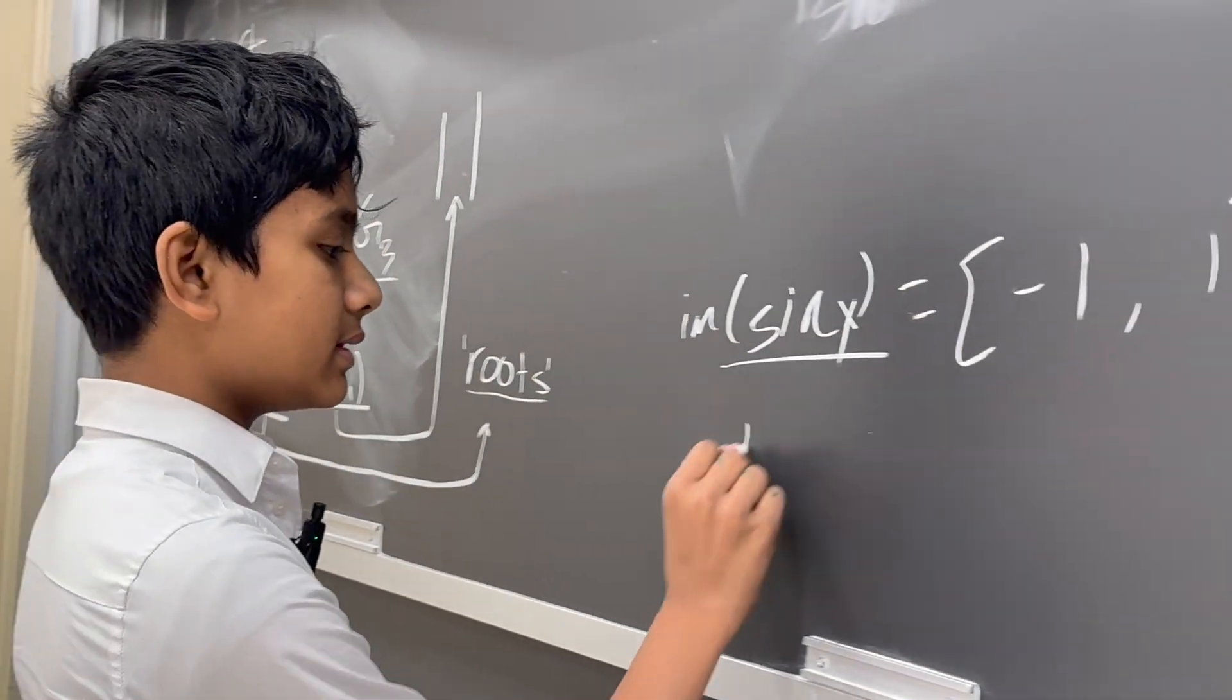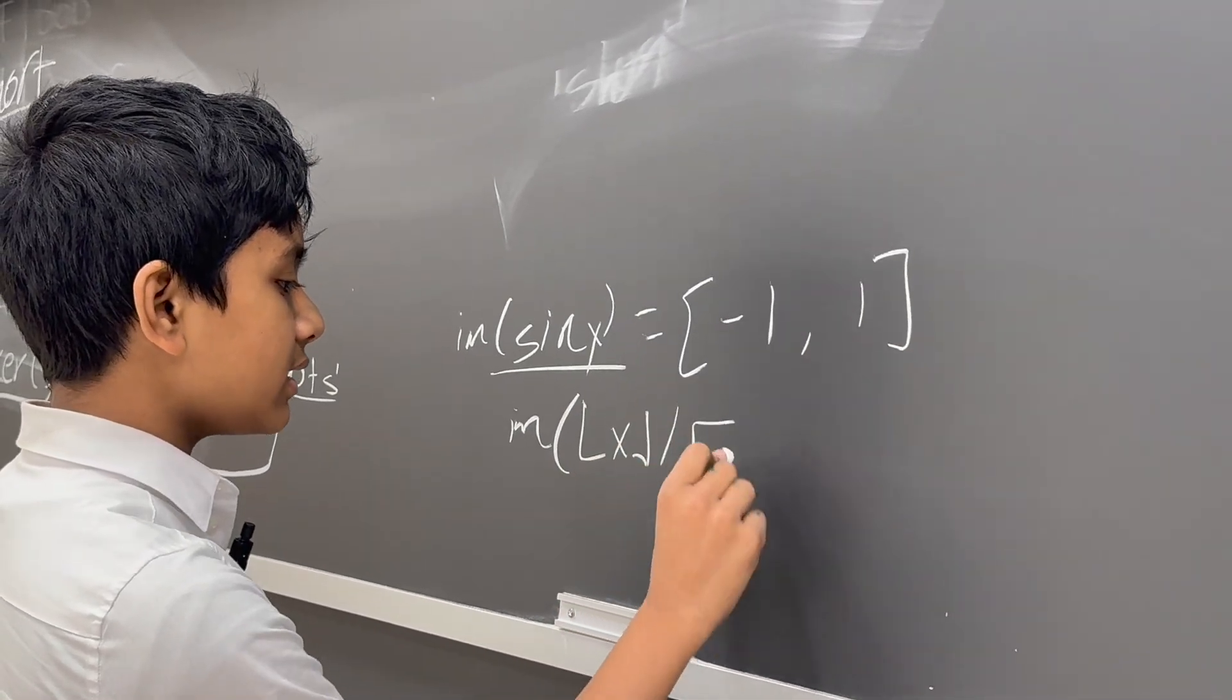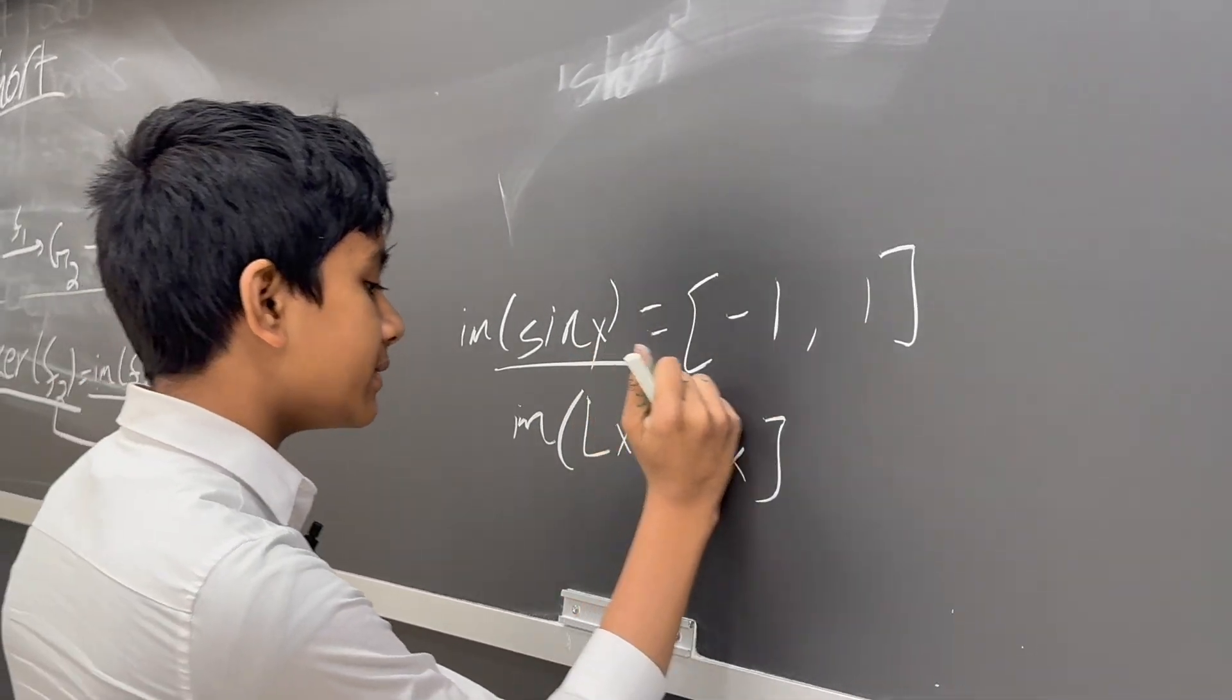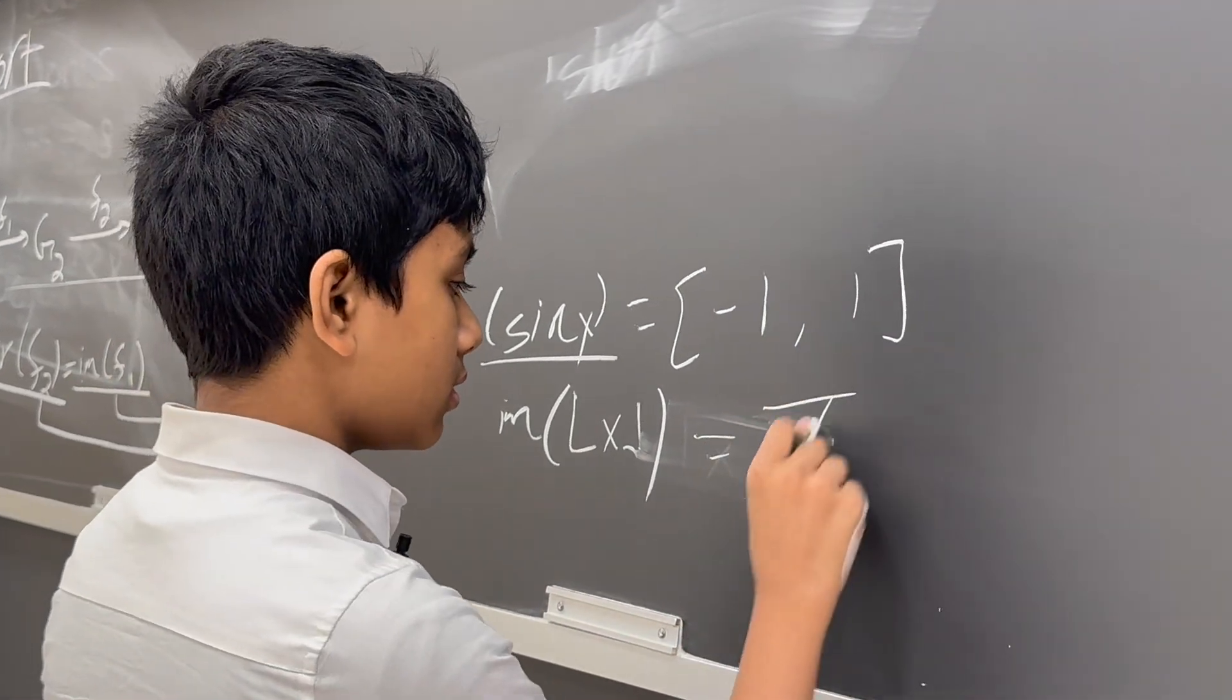And let's say the image of floor of x, or the image of ceiling of x. No, this is not the quotient space notation, so it might be integers.